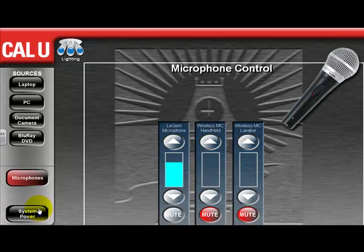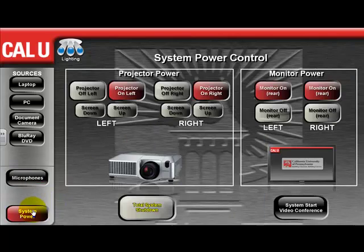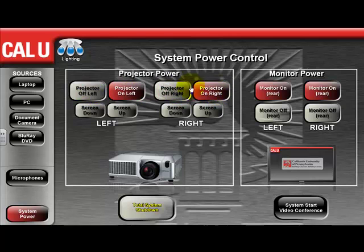In the system power menu, you have the following options: projector off left, projector on, projector off right, and projector on. Typically you do not need to utilize these, but they are available if necessary.